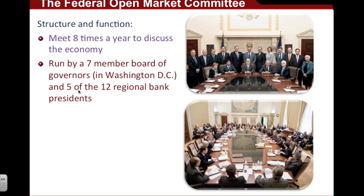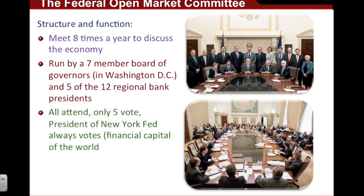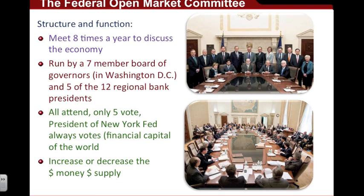When they make decisions, five of the 12 regional bank presidents will be voting members at any given time, and they revolve — there are four different ones each time they meet. The only one that is permanent is the New York Fed, which is a permanent voting body on the Federal Open Market Committee. We can think of New York as sort of the financial capital of not just the United States, but the entire world. Ultimately, the FOMC's decisions are to increase or decrease the money supply to affect the monetary system in the United States.